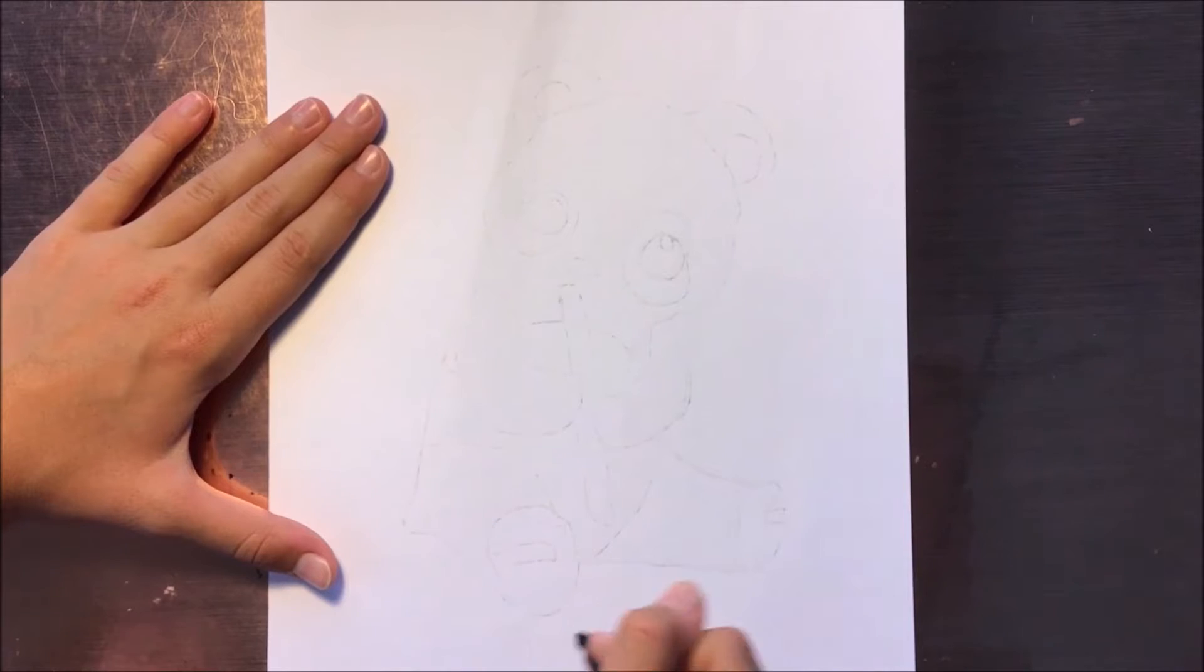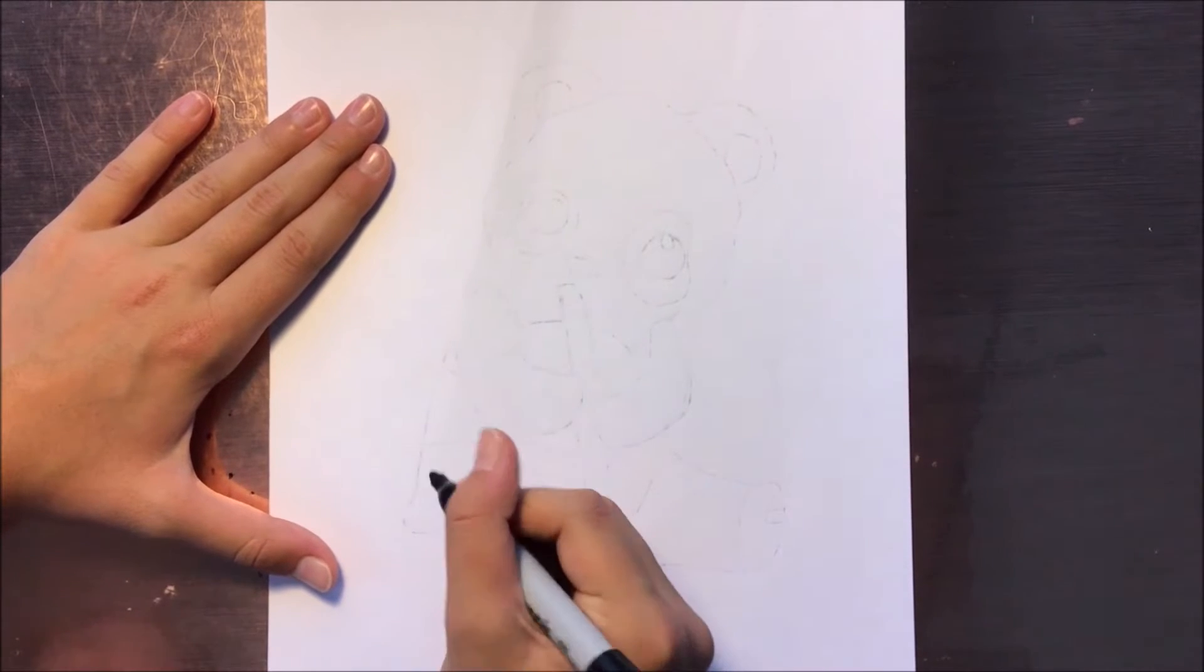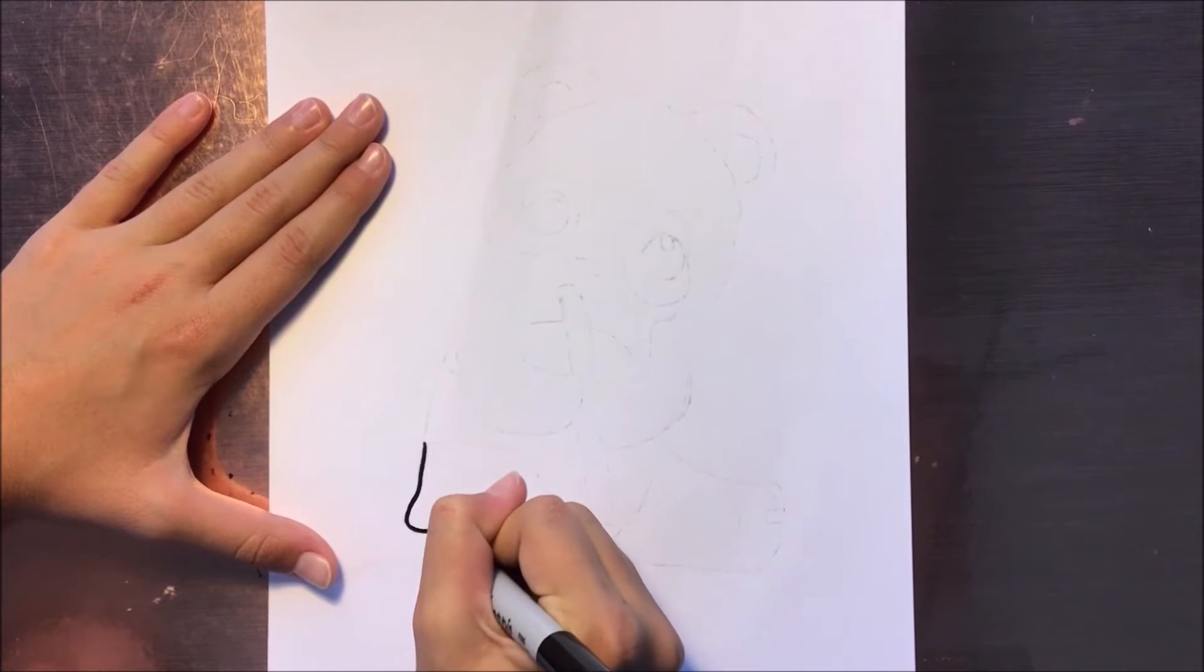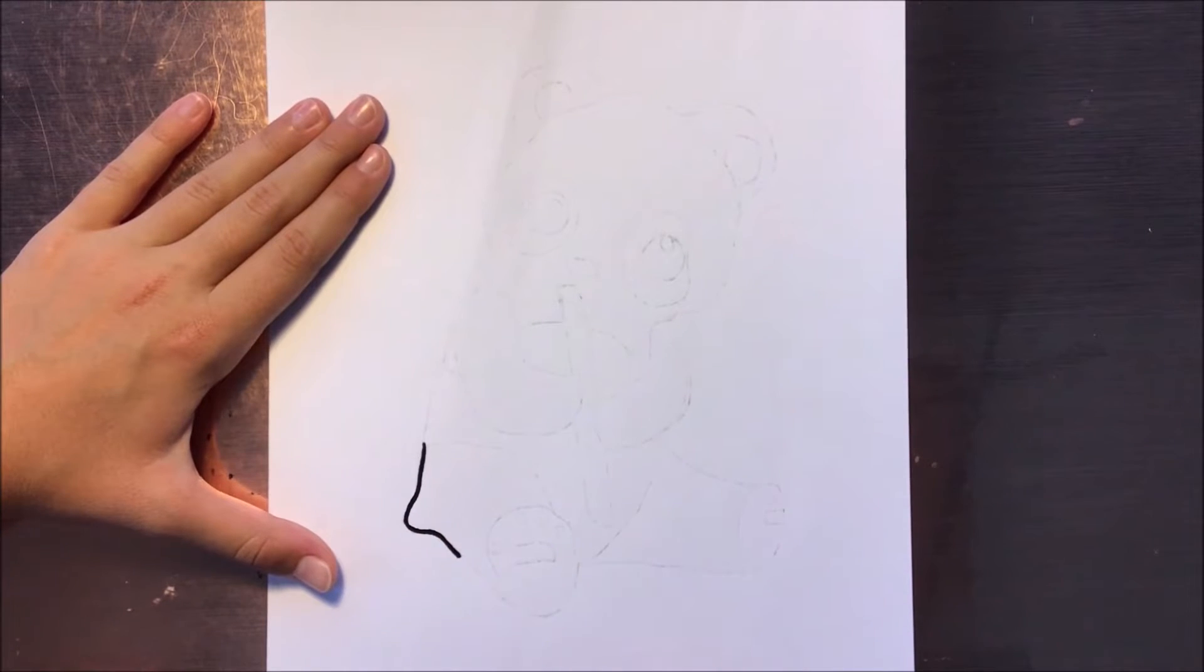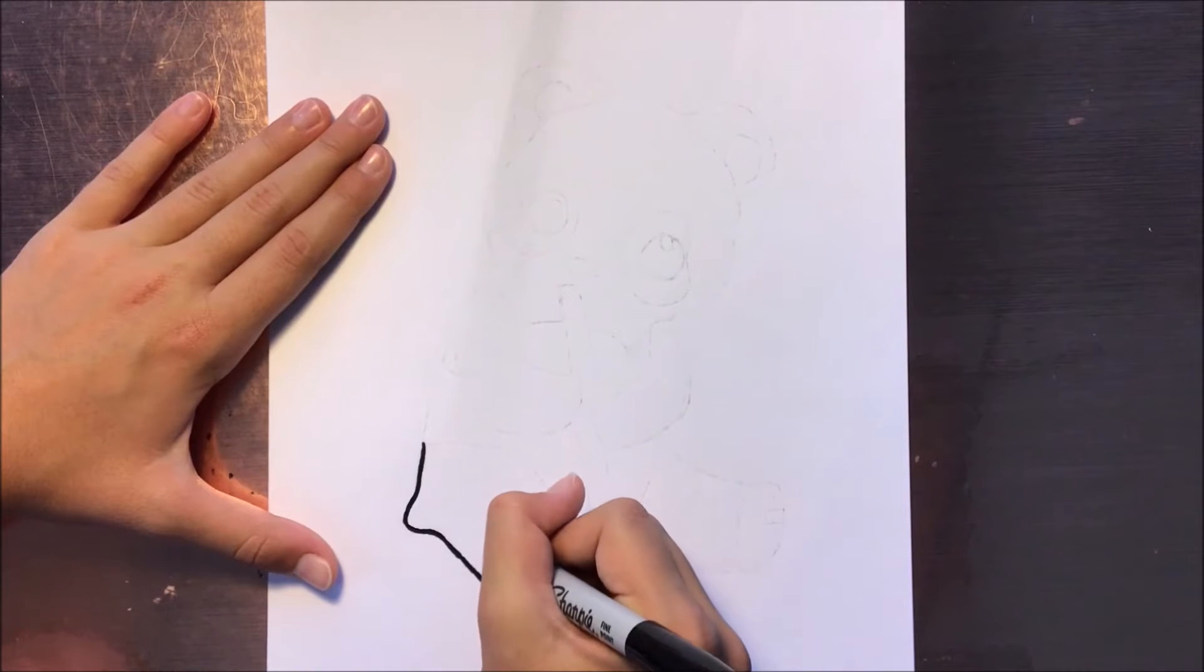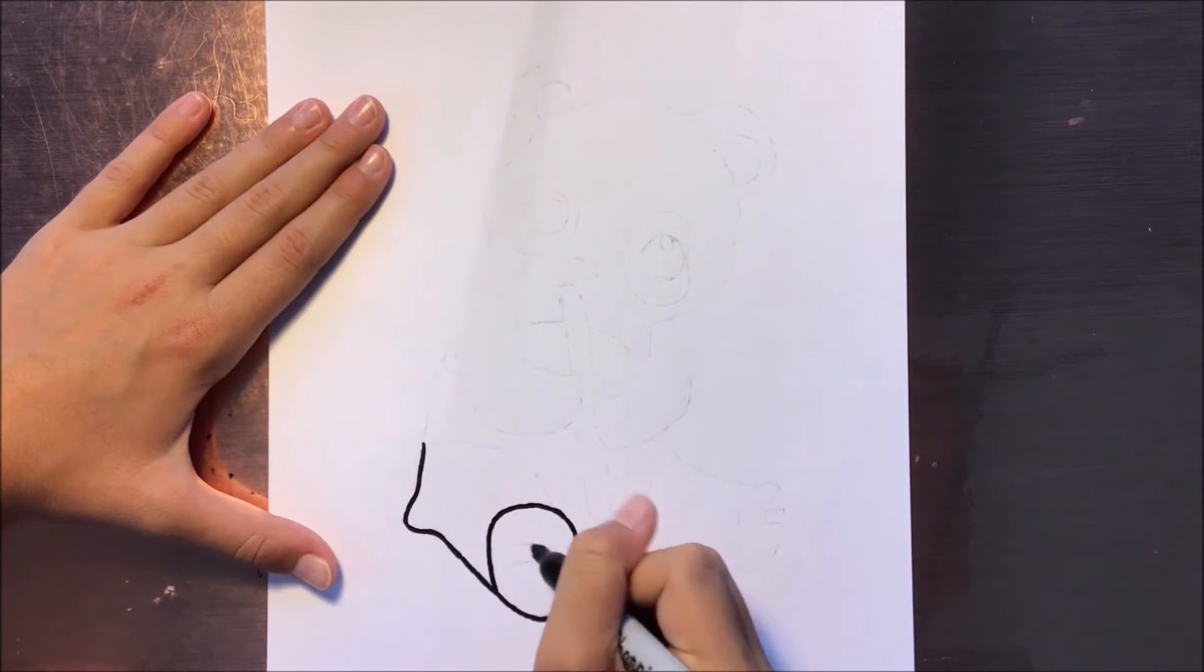To start drawing the panda, I'm going to start with the body part here. I'm just going to do a line like that, then continue around here. I'm going to do a big oval shape all the way around, coming around here. Now this is going to be a foot.